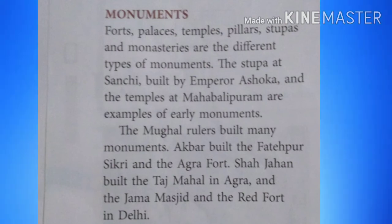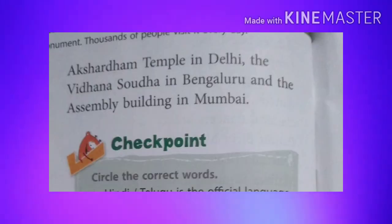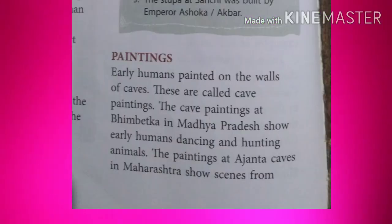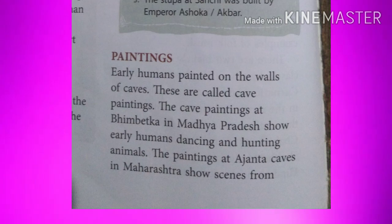There are also many modern monuments. These include Akshardham Temple in Delhi, the Vidhana Soudha in Bengaluru and the Assembly Building in Mumbai.